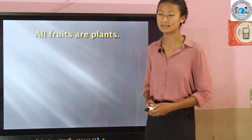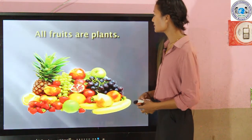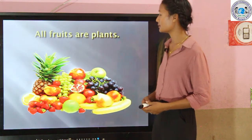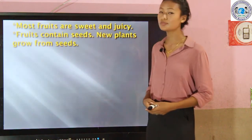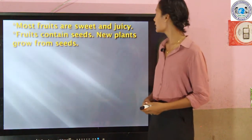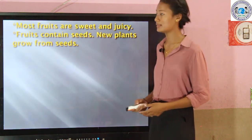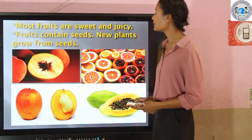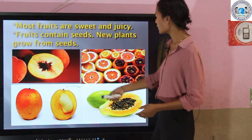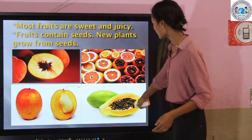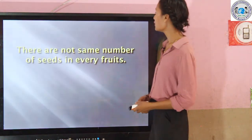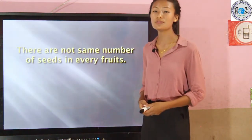These are the examples of vegetables. Now we are going to learn about fruits. All fruits are also plants. Most fruits are sweet and juicy. Fruits contain seeds, and new plants are grown from seeds. You can see mango contains a single seed and papaya contains many seeds, so there are not the same number of seeds in every fruit.